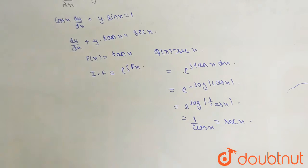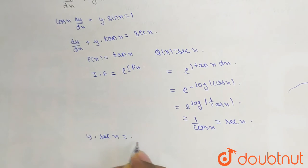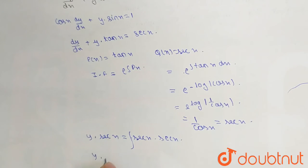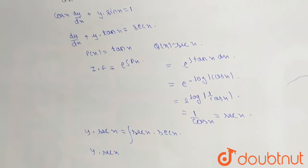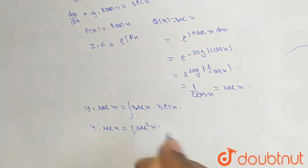Now, what is our equation? Our equation will be y times sec x equals sec x times the integrating factor, which is also sec x. So y times sec x equals the integration of sec squared x.